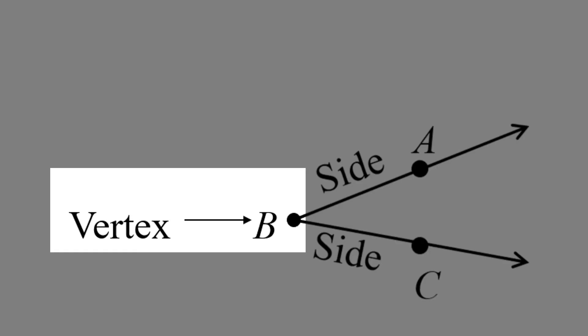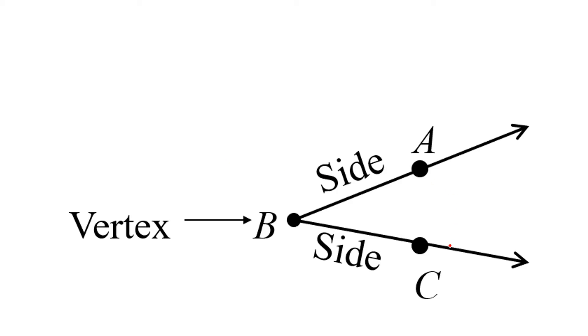We call that the vertex of this object, which is the angle swept out by these two rays.